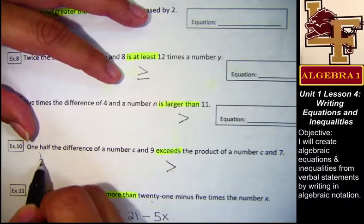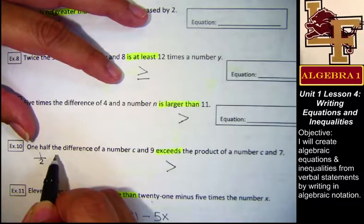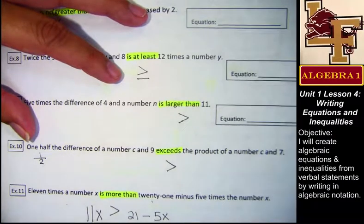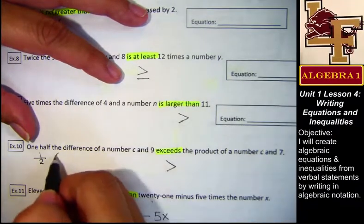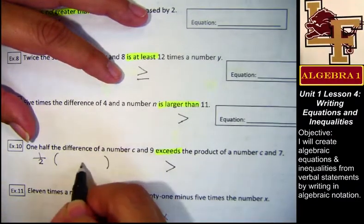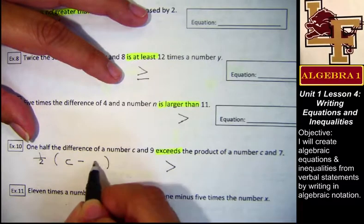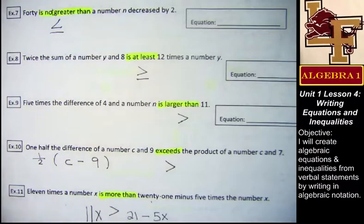I heard someone wanting ten. I assume you want ten because of this first half. One half I write this way. It immediately goes into difference of. So that implies that I've got some sort of parentheses here that help me group the subtraction that difference is telling me is happening. Is that okay?